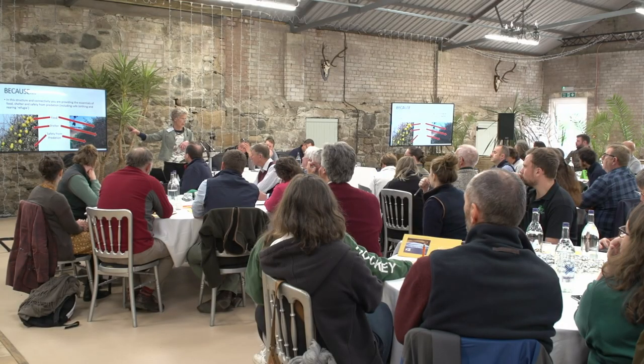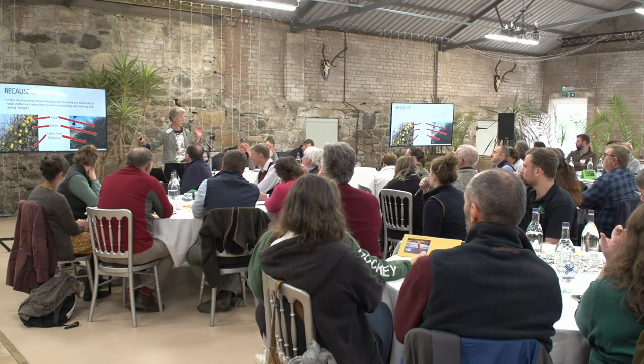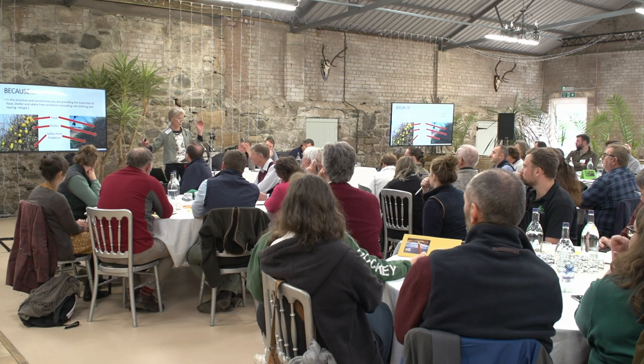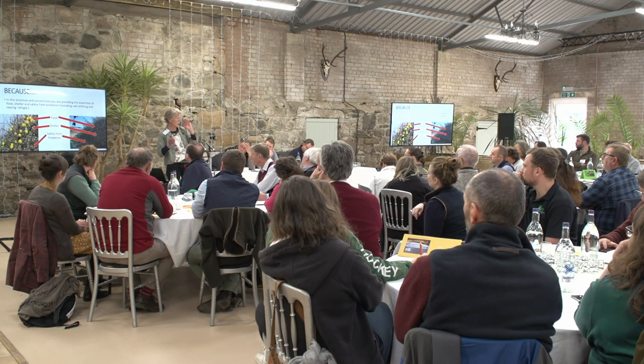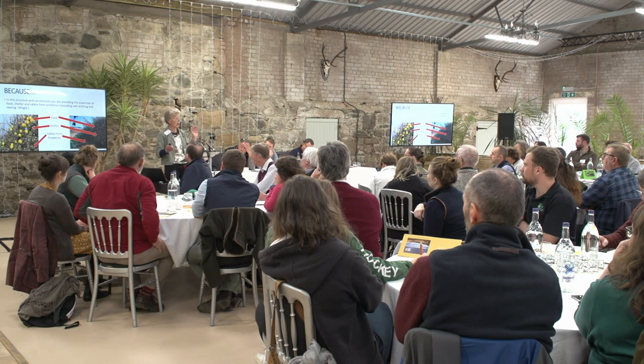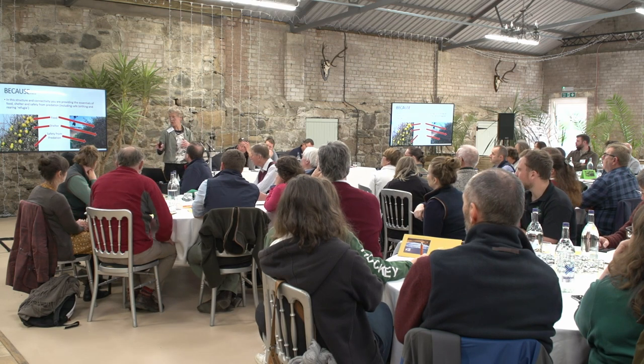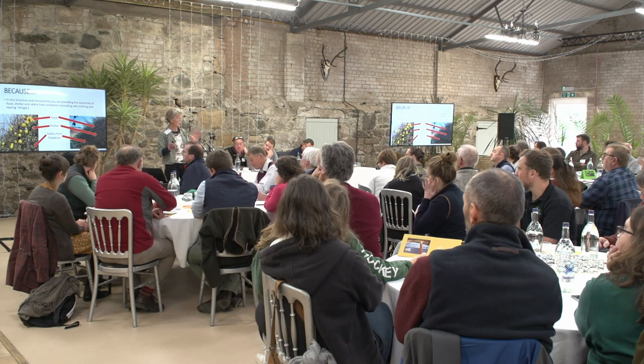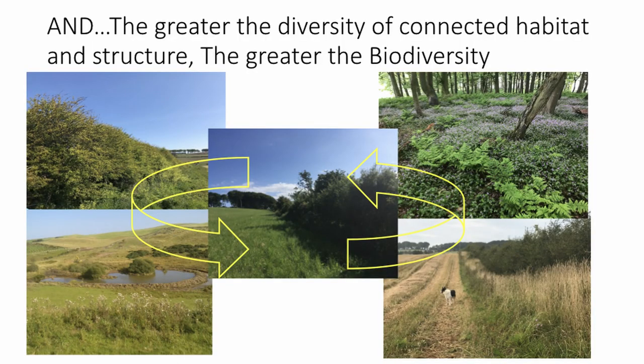In this rather rough-edged hedge — if you've ever watched a sparrowhawk prey on small songbirds — if you've got a very straight edge, the songbird has very little chance to get in and escape. So if you've got a nice rough edge, the songbird can escape the sparrowhawk. Going on from connectivity, the greater the diversity of connected habitat structure, the greater the biodiversity. Somewhere in that mélange of habitats, the sparrowhawk will find its prey.